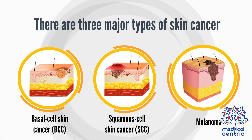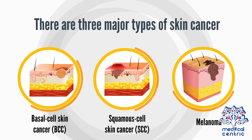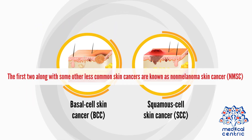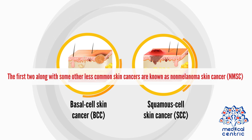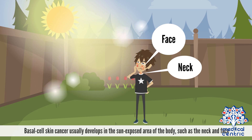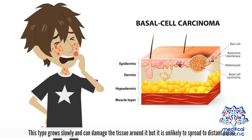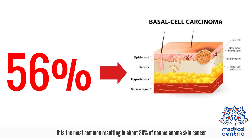There are three major types of skin cancer – basal cell skin cancer, squamous cell skin cancer, and melanoma. The first two, along with some other less common skin cancers, are known as non-melanoma skin cancer. Basal cell skin cancer usually develops in sun-exposed areas of the body, such as the neck and face. This type grows slowly and can damage the tissue around it, but it's unlikely to spread to distant areas or become life-threatening. It is the most common, resulting in about 80% of non-melanoma skin cancer.